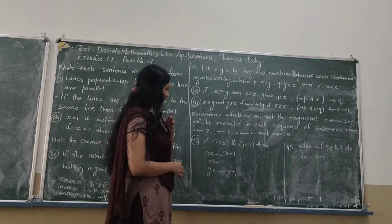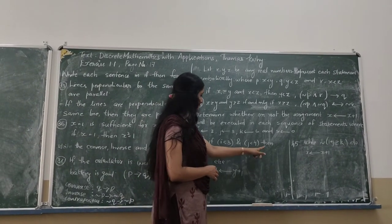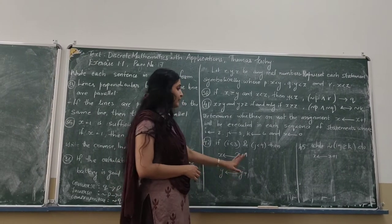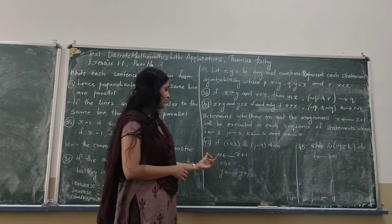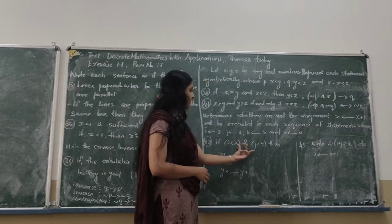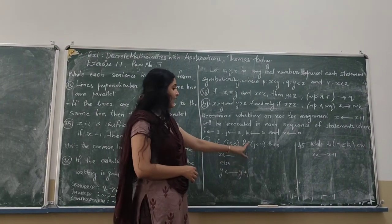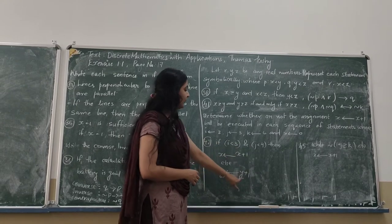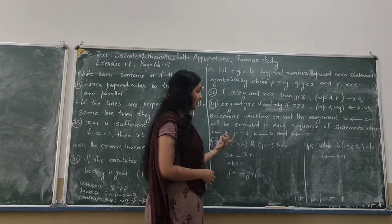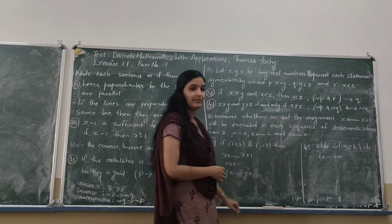Now the 42nd question: if I less than 3 and J less than 4, then X goes to X plus 1; else Y goes to Y plus 1. We need to check whether this compound statement is true or false. If true, then X goes to X plus 1 will be executed; if false, then Y goes to Y plus 1 will be executed.